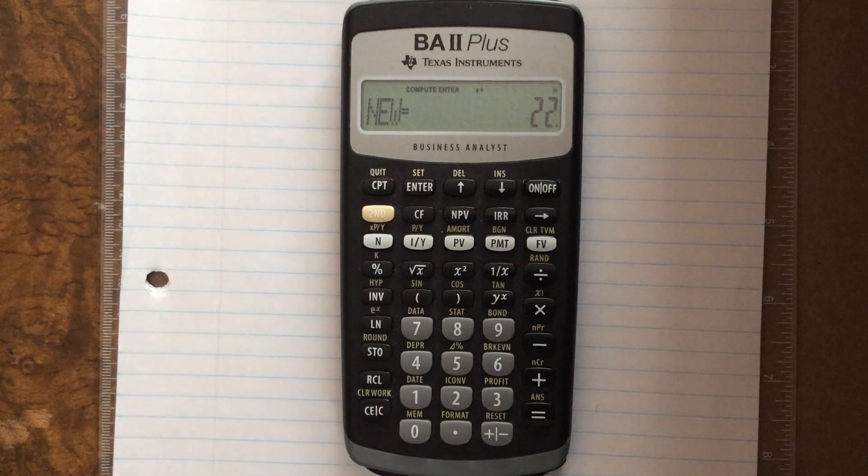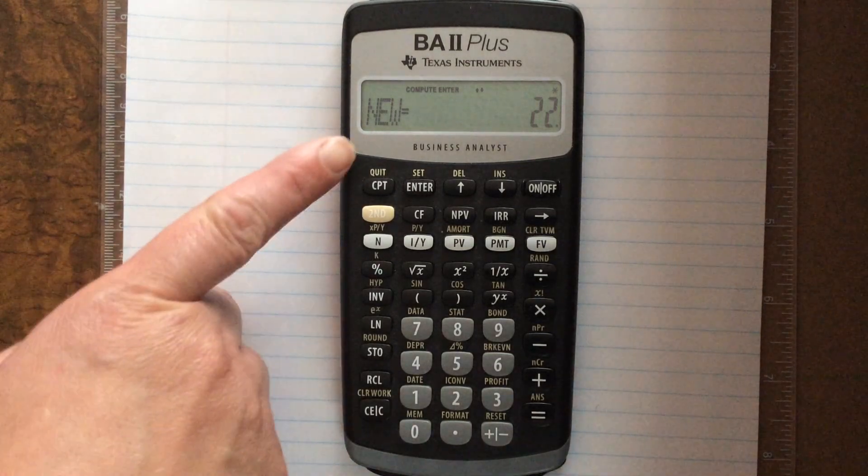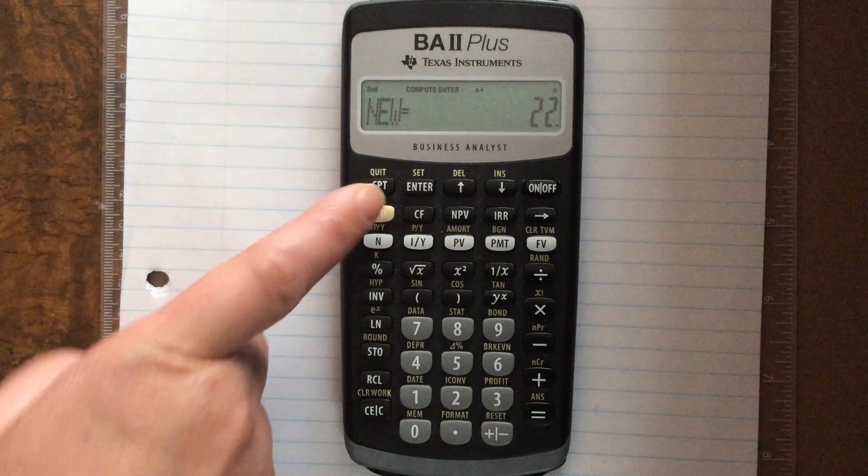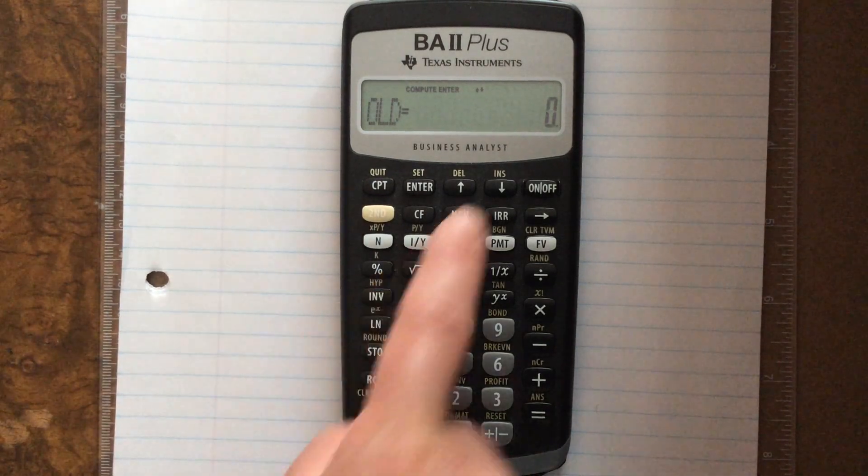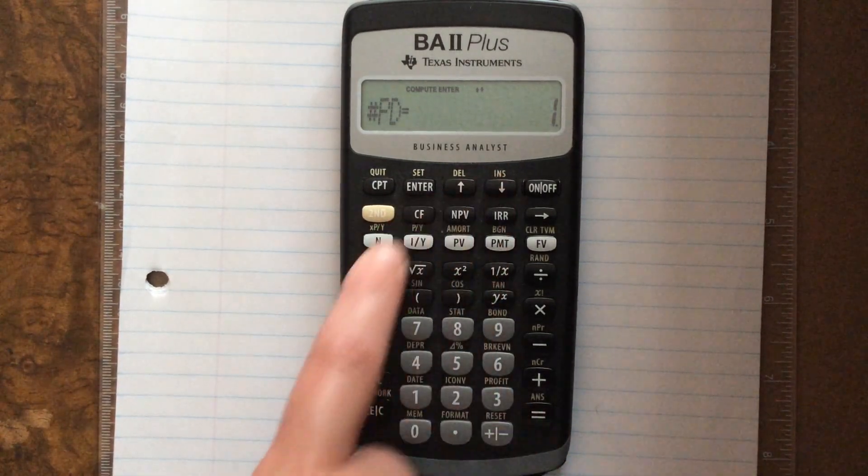If you want to clear out all of the values that you've put in, you're just going to go second function, clear, and that's going to reset everything to zero.